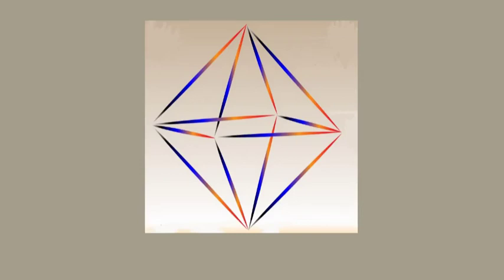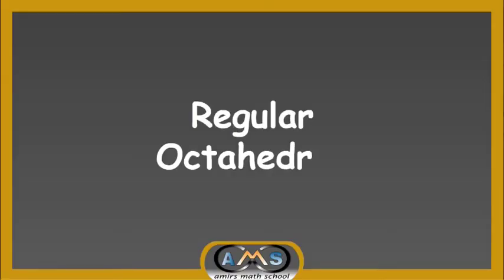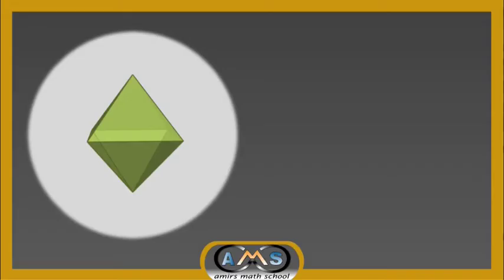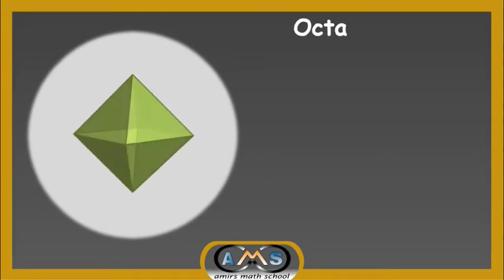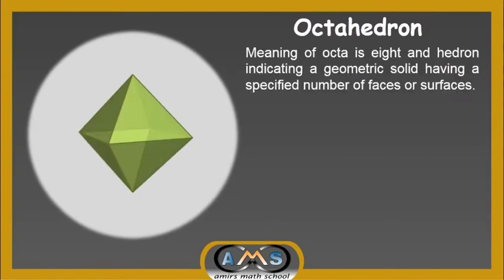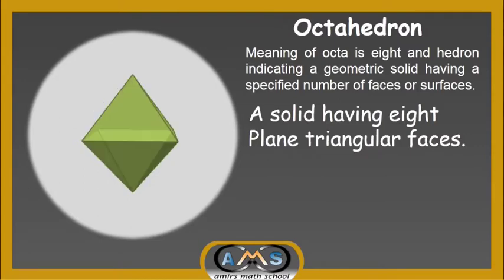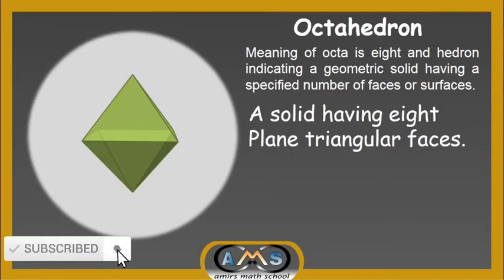In this video, I am going to discuss about a very special geometric solid, that is the regular octahedron. Let me explain about the octahedron. Here you see one octahedron. The meaning of 'octa' is 8, and 'hedron' indicates a geometric solid having a specified number of faces or surfaces. So a solid having 8 plane triangular faces, we can call an octahedron.